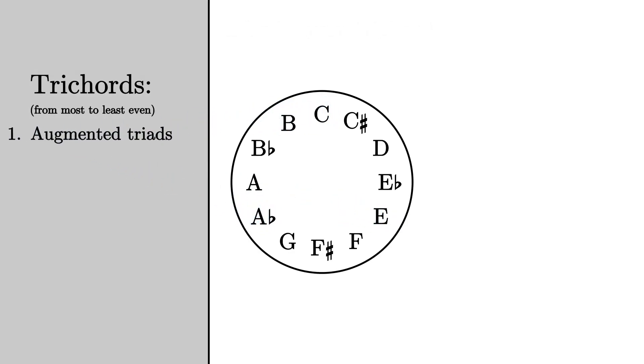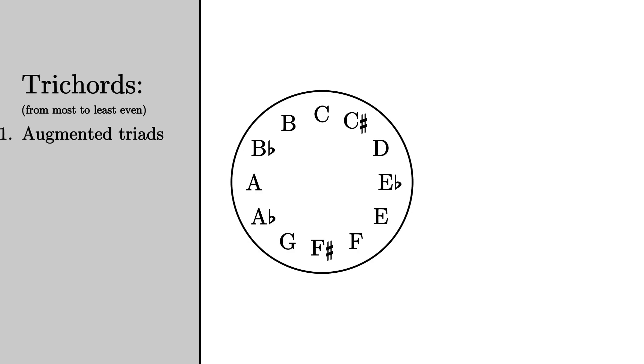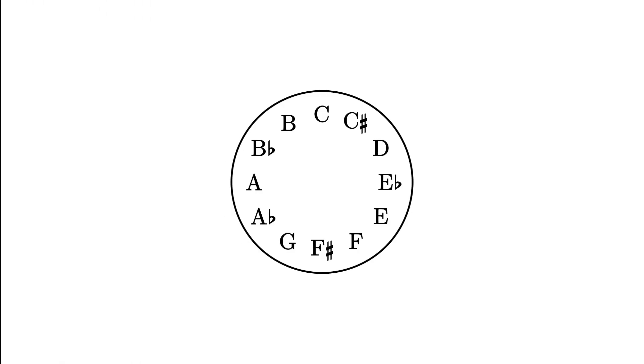From there, you can measure how even any other set is by finding how much you would have to change it to make it become perfectly even. The more you have to change it, the less even it is.